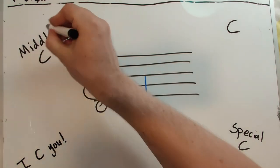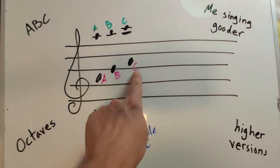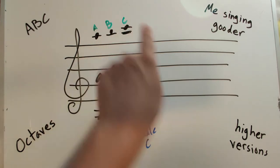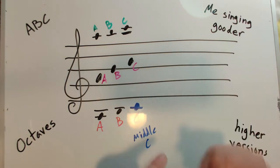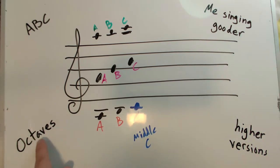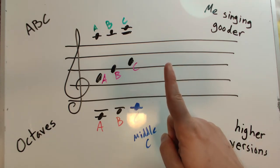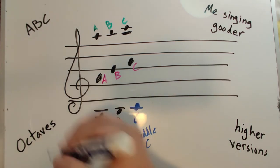It is middle C! Your next question. A, B, C. A, B, C. A, B, C. These are all examples of... A, B, C. Me, Sagan, Gooder. Octaves. Or higher versions. And the answer is... Octaves! These are all examples of octaves.